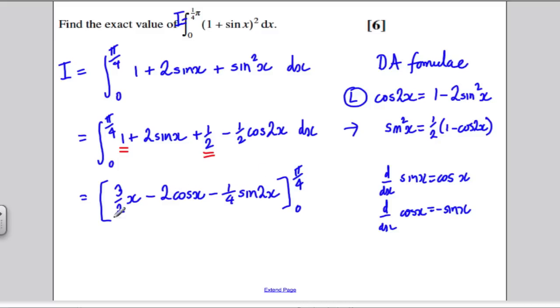Now it's about substituting in π/4 and 0. So substituting in π/4, 3/2 times π/4 is simply 3π/8. Putting in π/4 here, you get √2/2. So -2 times √2/2 is simply -√2. And substituting in π/4 to here would be working out sin π/2. And we know sin π/2 is 1. So this would be -¼. That's what happens when we substitute in π/4.